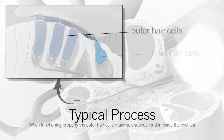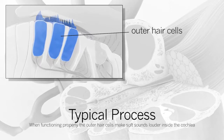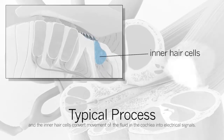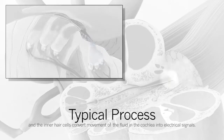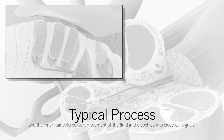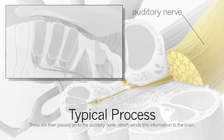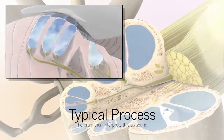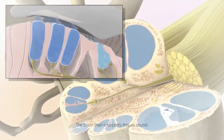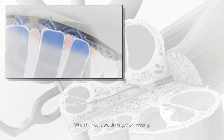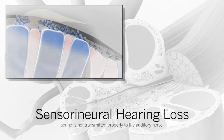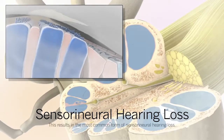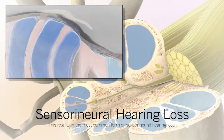When functioning properly, the outer hair cells make soft sounds louder inside the cochlea, and the inner hair cells convert movement of the fluid in the cochlea into electrical signals. These are then passed on to the auditory nerve, which sends this information to the brain, and the brain interprets this as sound. When hair cells are damaged or missing, sound is not transmitted properly to the auditory nerve, resulting in the most common form of sensory neural hearing loss.